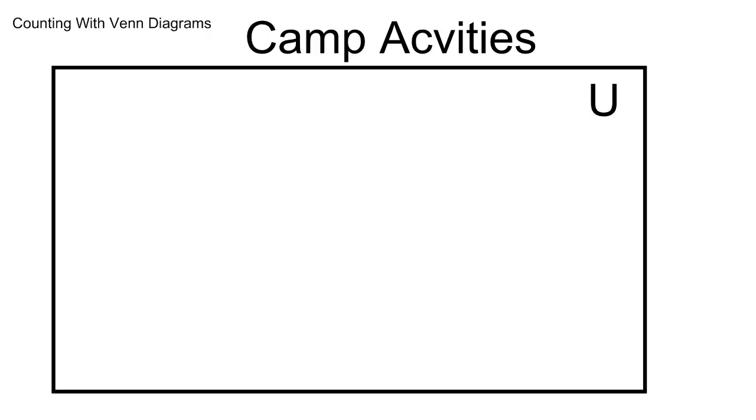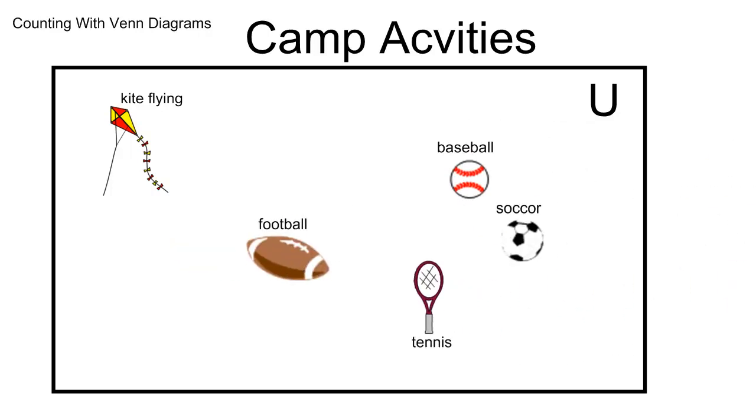And so, for example, if we were looking at all of the available camp activities that you could do when you went to summer camp, you might have kite flying, baseball, football, soccer, tennis, maybe it's a special camp where you could play cricket, and of course, badminton is always good. And so in the universe, these are all the activities that are available at camp.